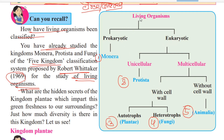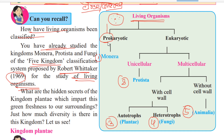Let us study the classification of living organisms one by one. Prokaryotic cells — these are cells in which the nucleus and organelles are not completely developed. In prokaryotic cells, the nucleus and organelles are not well developed, and these organisms are generally unicellular.